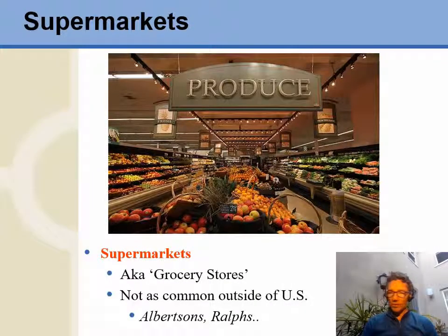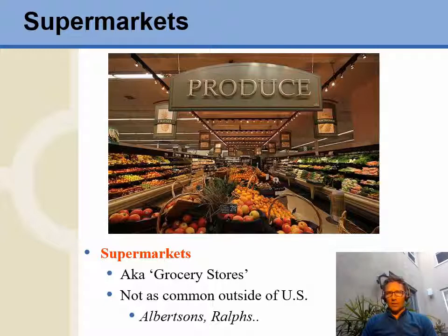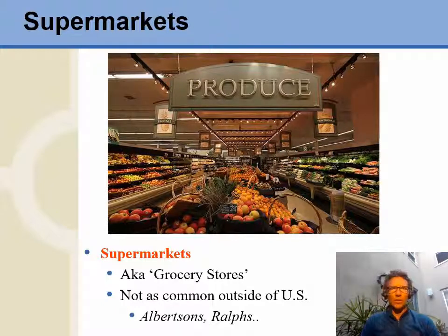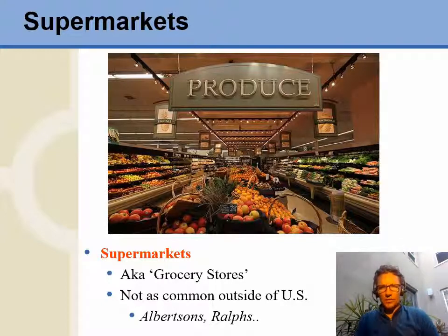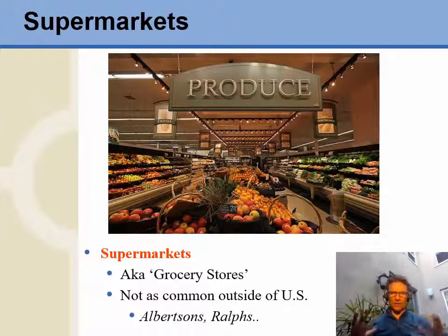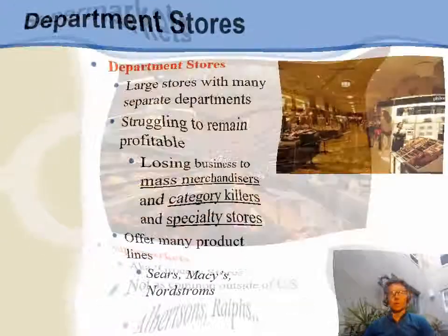We still have supermarkets, or grocery stores, as we might also call them. In other parts of the world, people still go to a butcher store just for meat and a vegetable place just for produce. Supermarkets are starting to pervade the world and become more common as these retail concepts spread. We've seen these stores get more upscale — there's a push towards more organic and sustainable food and higher prices to go with it.